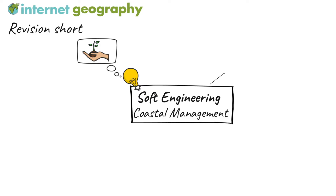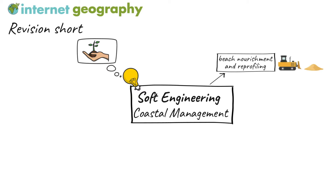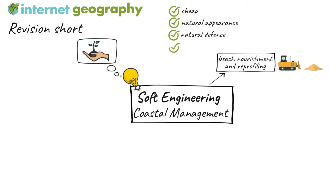Beach nourishment is the addition of sand or pebbles to a beach to increase its height and width, to provide protection from erosion or flooding by absorbing wave energy. Bulldozers can re-profile the beach to create high ridges. The approach is cheap and retains the natural appearance of the beach. Beaches are a natural defence against erosion. Additionally, the beach is a useful amenity for tourism, bringing economic benefits to the area.